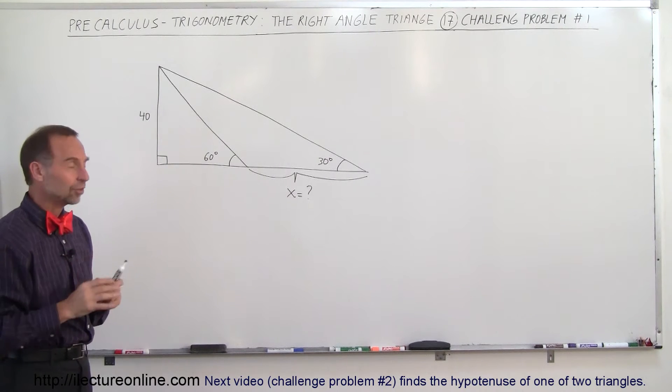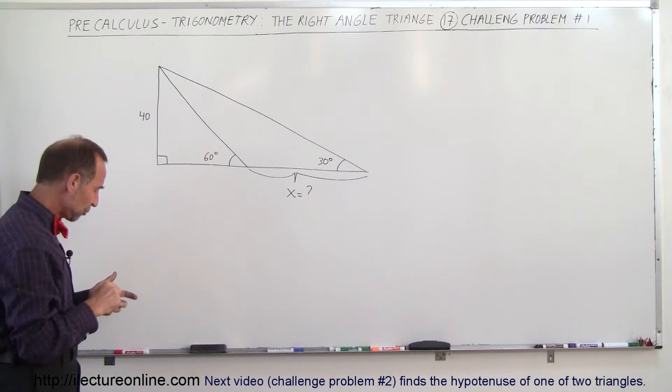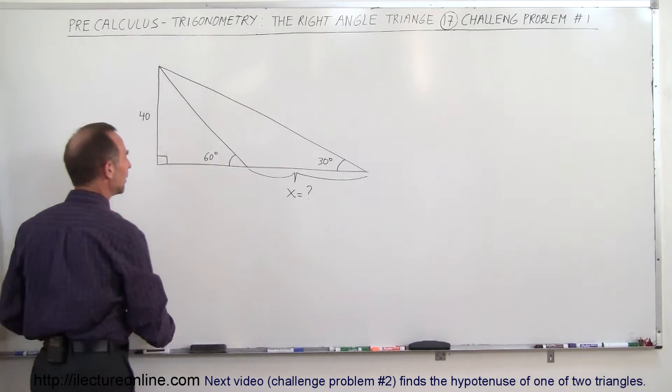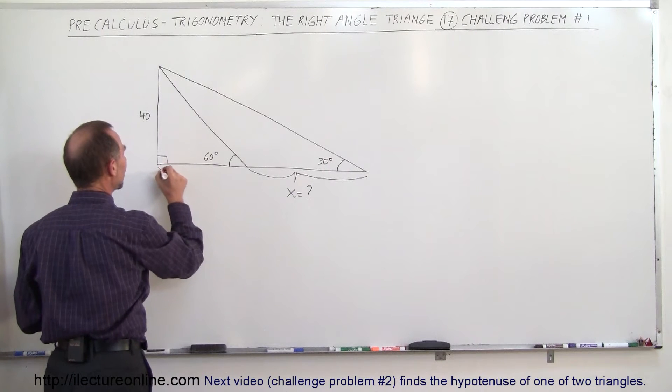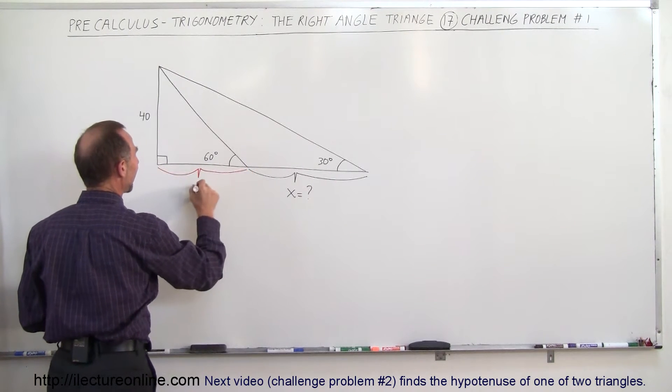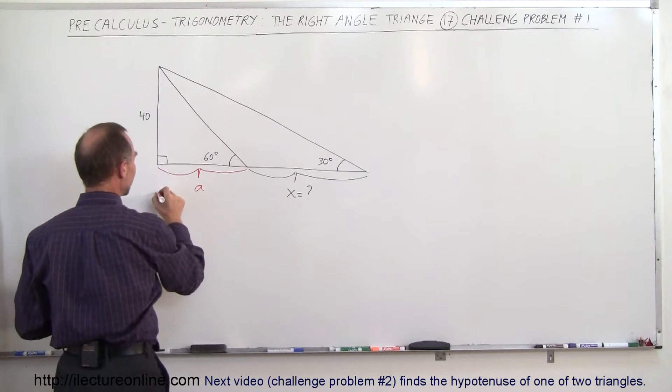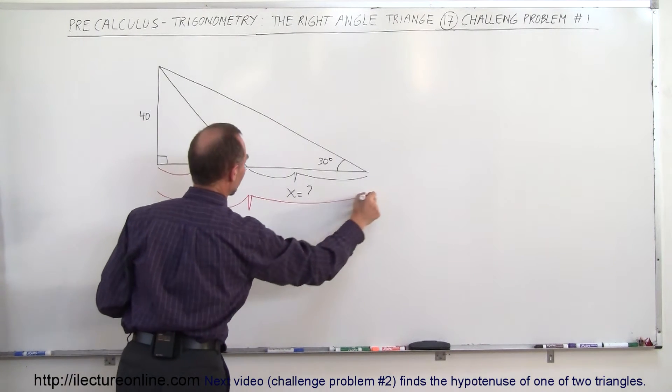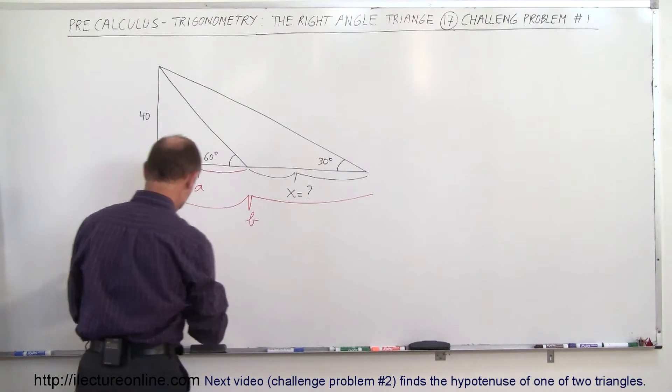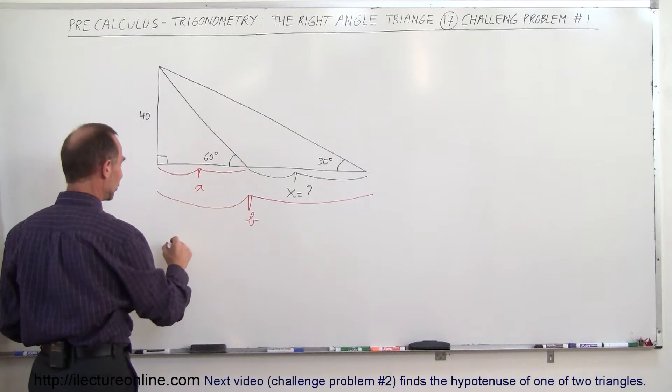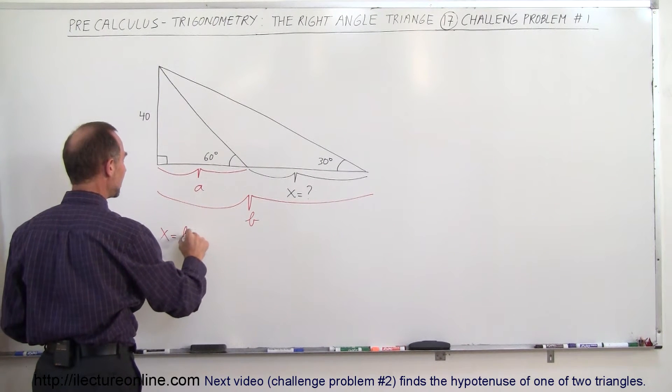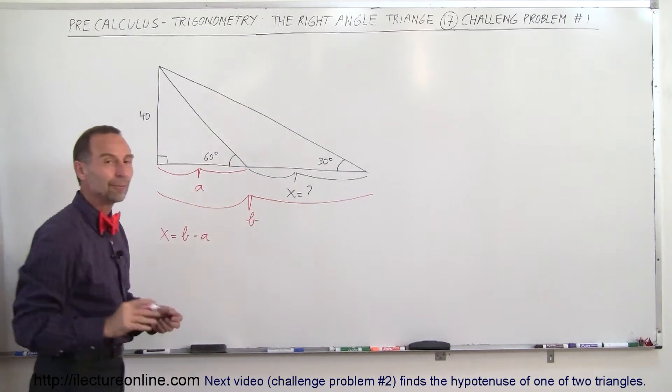Well, there's a number of triangles in there, and really the approach probably is going to be to find this length right here, let's call this length A, then find this length right here, let's call this length B, and then from that, of course, we can conclude that X is equal to B minus A. So that would be our plan of attack.